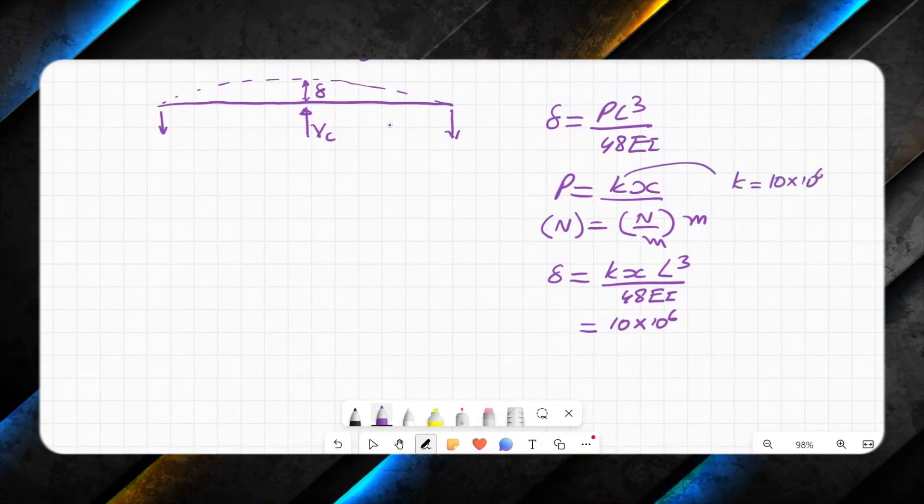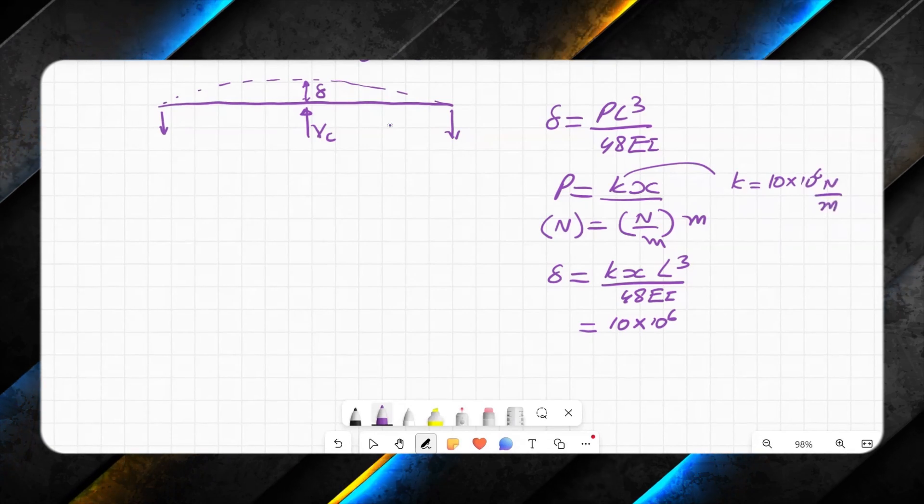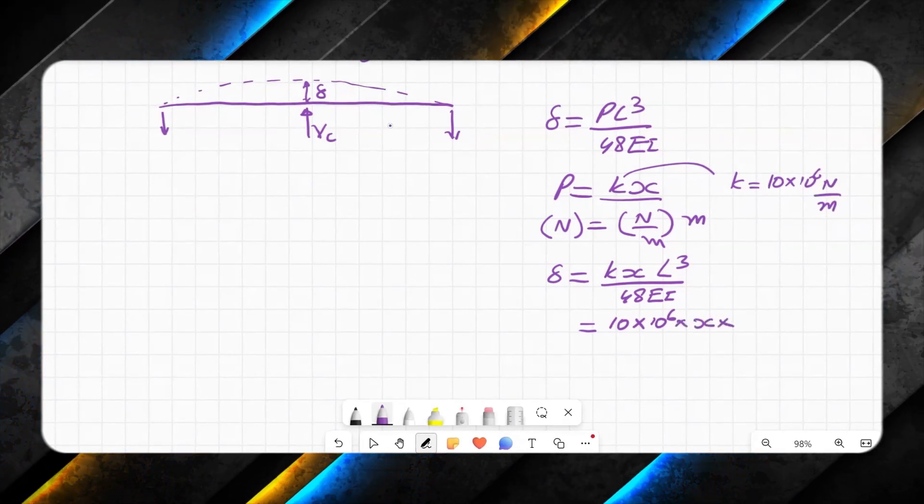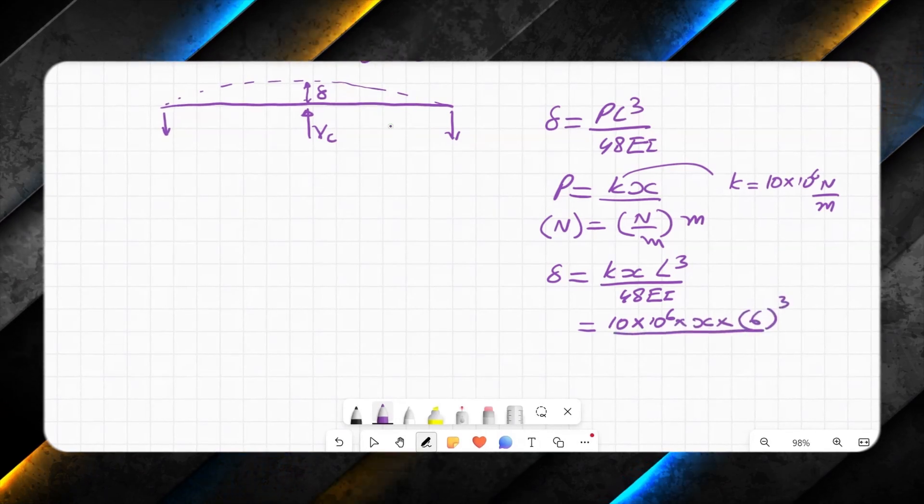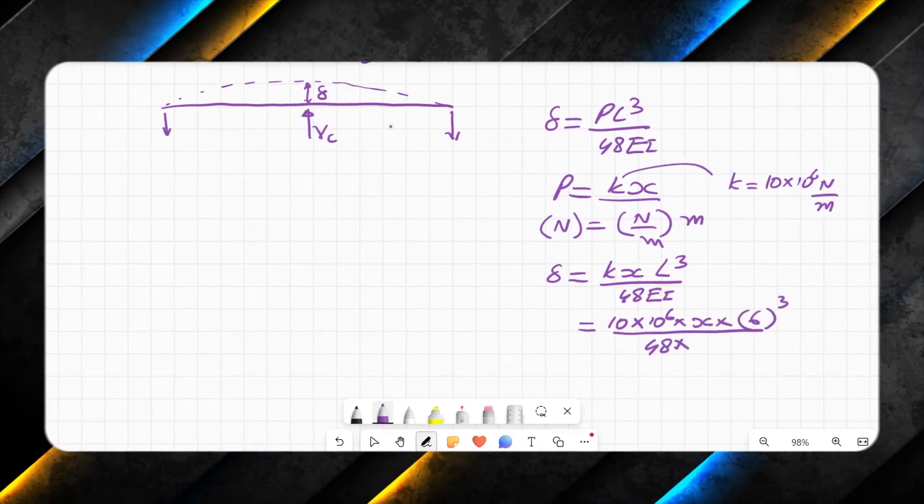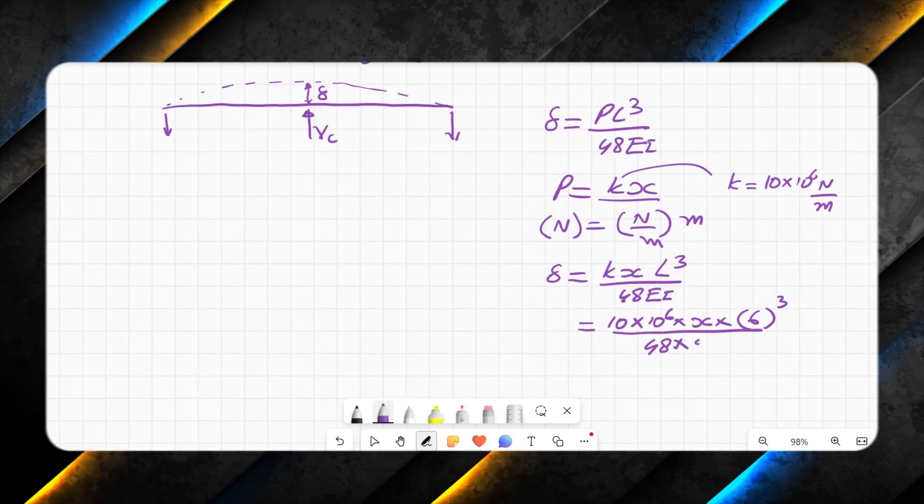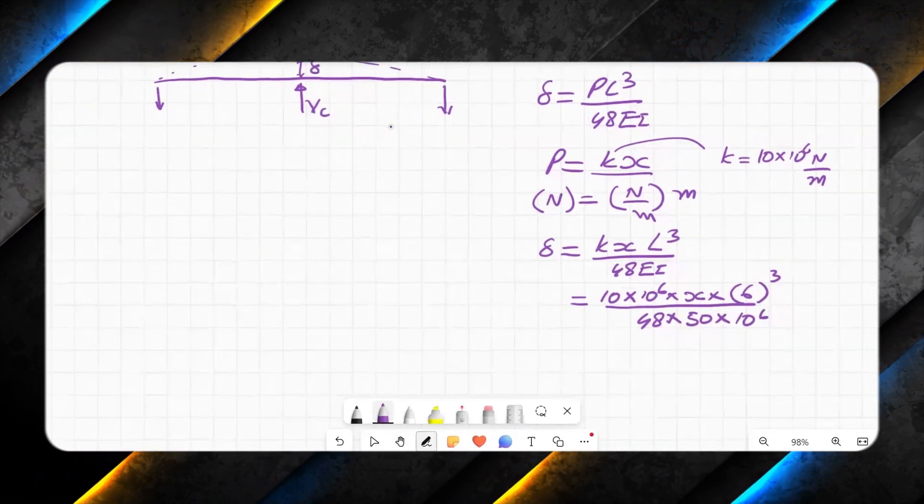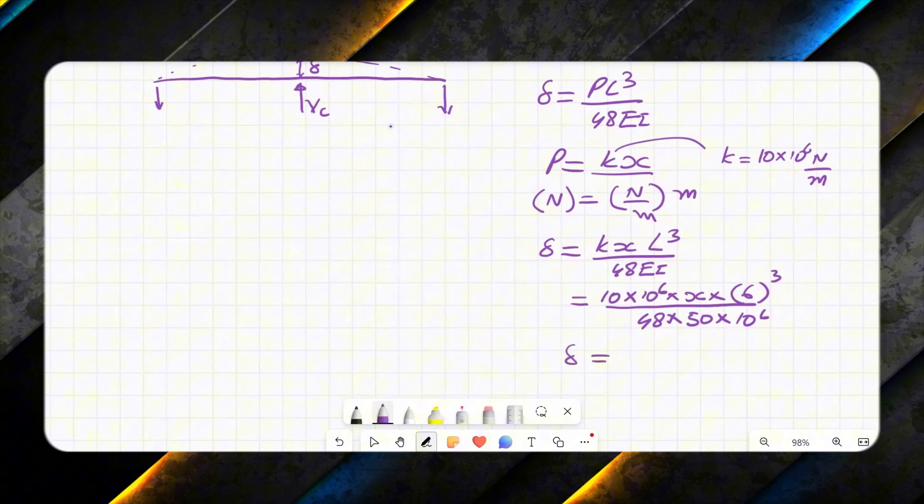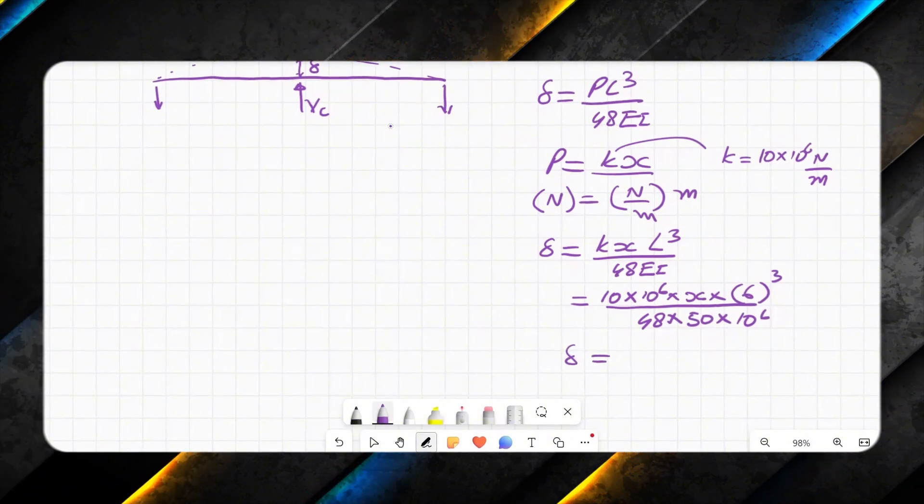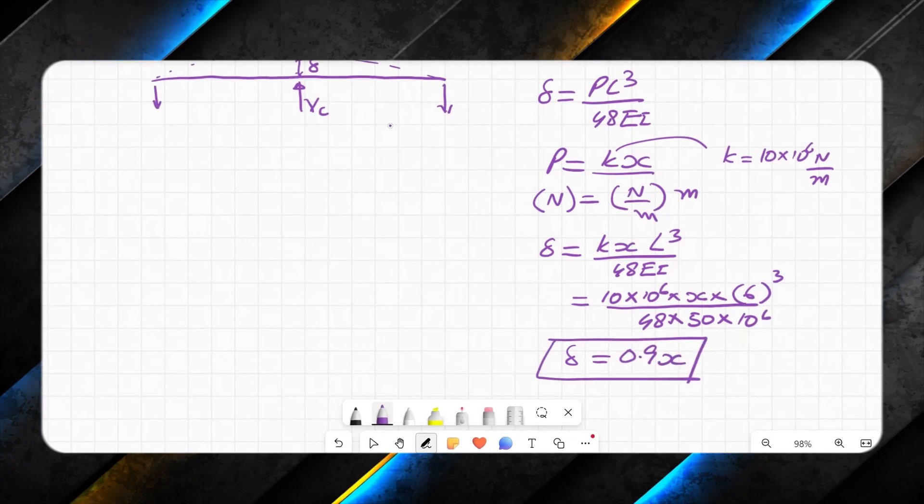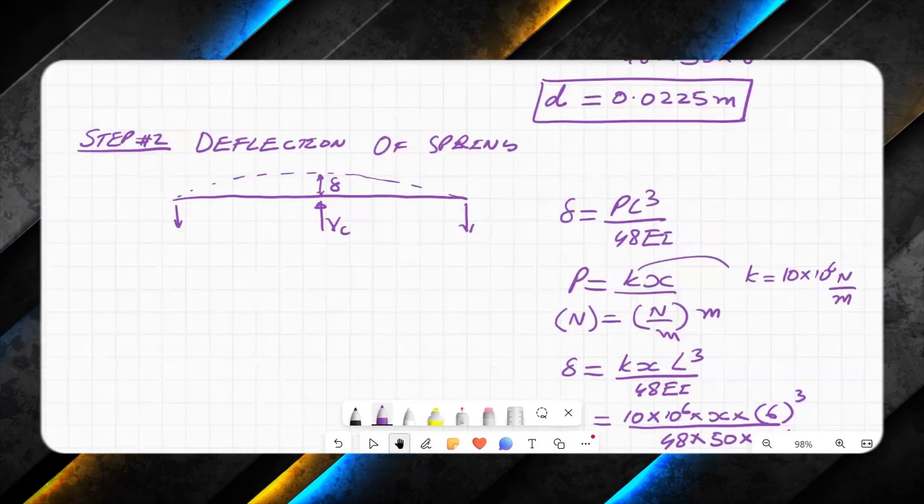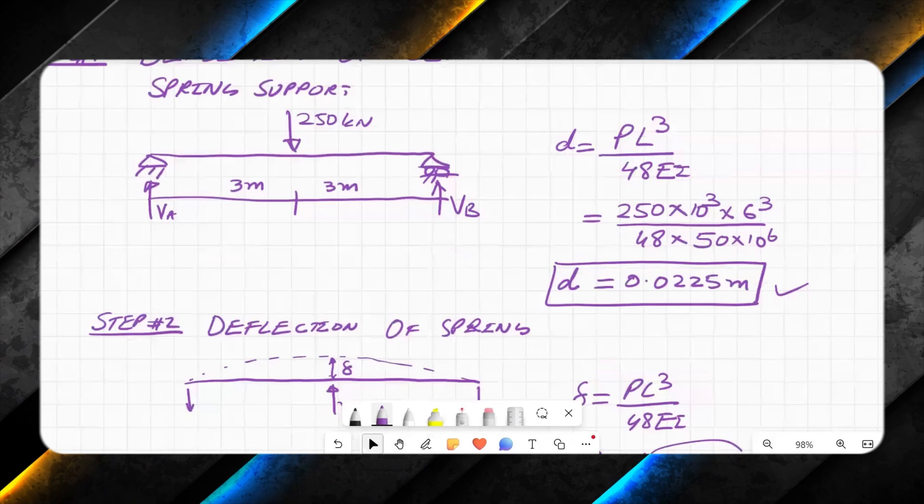K equals 10 × 10^6 newton per meter multiplied by x, multiplied by L, which is 6³, divided by 48 into EI, which is 50 × 10^6. If you simplify this equation, you will get value of delta as 0.9x.